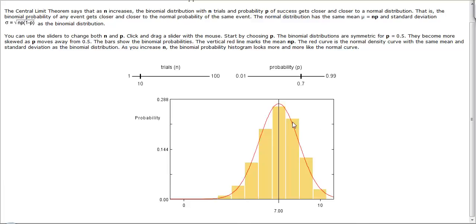The purpose of this demonstration is to show how the central limit theorem can be applied to binomial probabilities. And what the theorem suggests is that as the number of trials with a fixed probability of success gets closer and increases, then the entire distribution will get closer to a normal distribution.